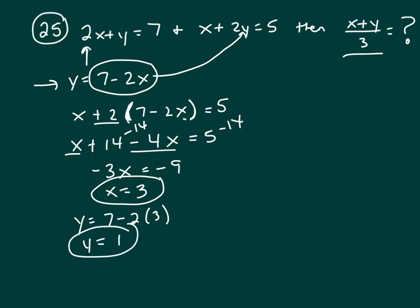Now let's substitute both of those in our expression. x plus y, that's 3 plus 1 over 3. So your answer is going to be 4 thirds. This is number 25, so your answer is B.